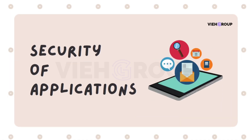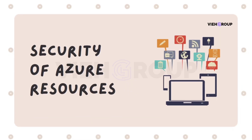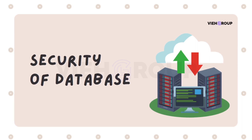For application security, try to access applications without proper authentication and check for data leakage and unauthorized access. Make sure web applications are properly secured and test for things like SQL injection, cross-site scripting, and session handling. You can also check that your Azure resources are not exposed to the public, and ensure databases are properly configured and secured, testing for weak passwords, open ports, and vulnerable software.